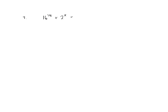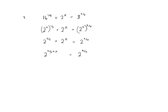For question 7, we have 16 to the power of 1 fifth multiplied by 2 to the power of x equals 8 to the power of 3 over 4. Rewriting as powers of 2: 2 to the power of 4 to the power of 1 fifth, multiplied by 2 to the power of x, equals 2 cubed to the power of 3 over 4. This gives 2 to the power of 4 fifths times 2 to the power x equals 2 to the power of 9 over 4. So 4 fifths plus x equals 9 over 4, meaning x equals 9 over 4 minus 4 over 5, which equals 29 over 20, or 1 and 9 twentieths.